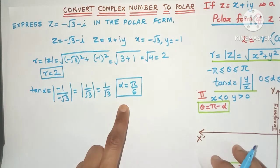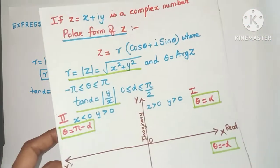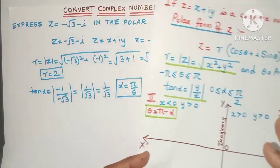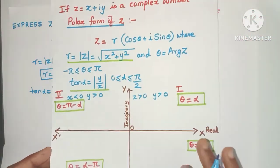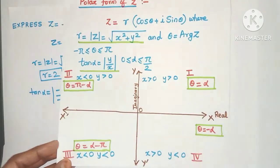But is this the theta value that we want? Not always. So to find out the theta value you also need to find out in which quadrant this complex number lies.